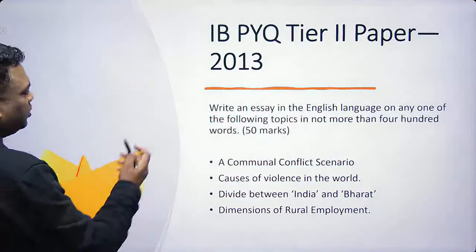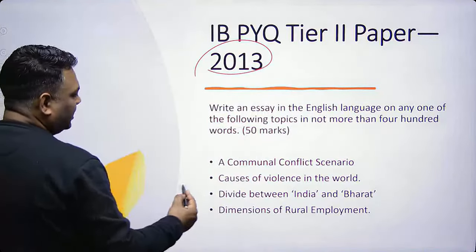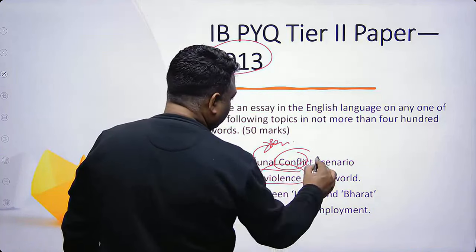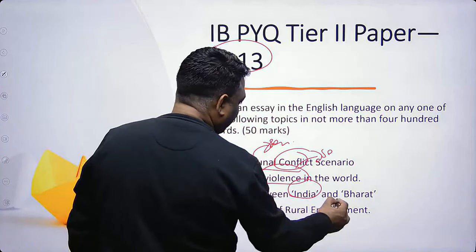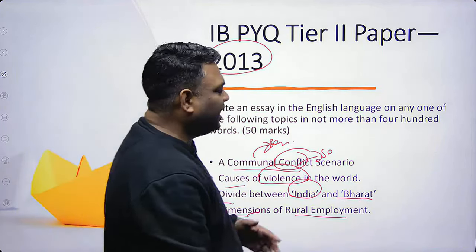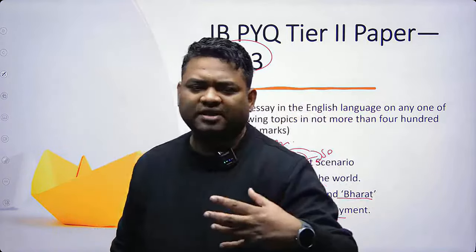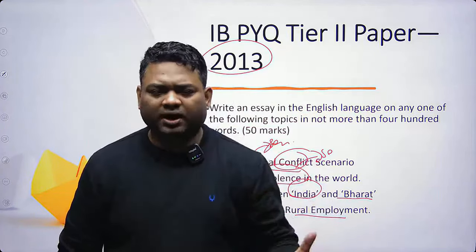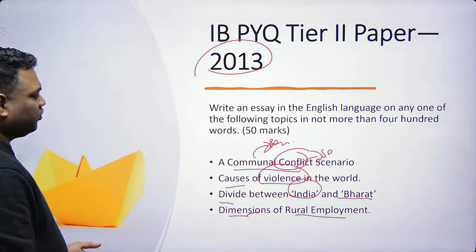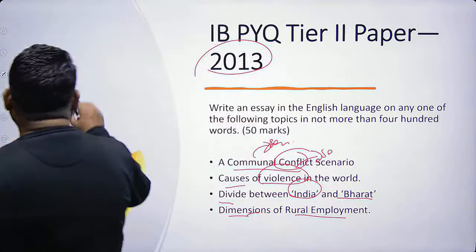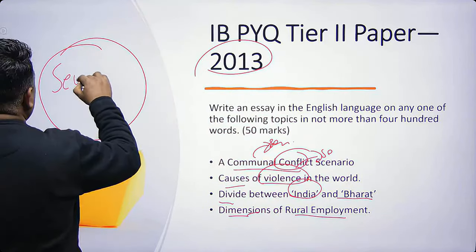In 2003, IB topics included communal conflict scenario against security, causes of violence in the world — that's security. 'Divided between India and Bharat' — meaning the society has progressed but rich-poor divide exists, town-village differences. In 2013, dimension of rural employment and the rest are associated with security. So the big deal is that in paper 2, security is strong.